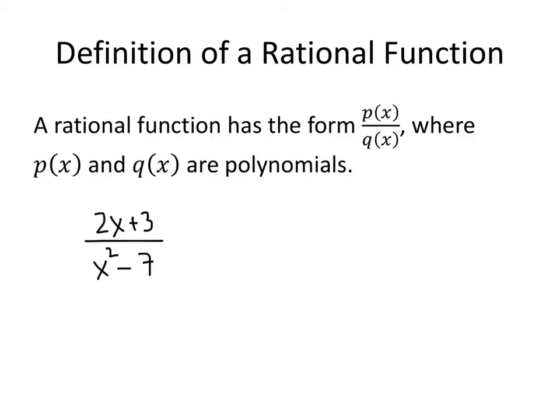Keep in mind that constants are polynomials as well. So something that looks like 5 divided by x squared plus x plus 3 is also a rational function. Even though the top of that fraction is just the number 5, that's a polynomial. It just happens to be a boring polynomial.